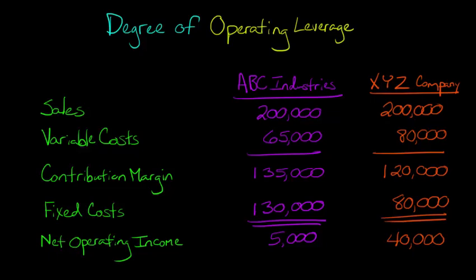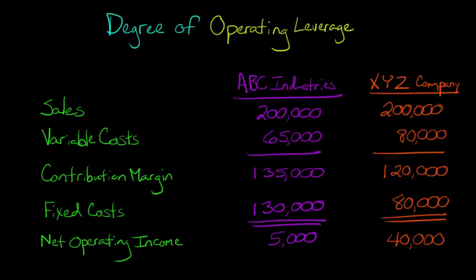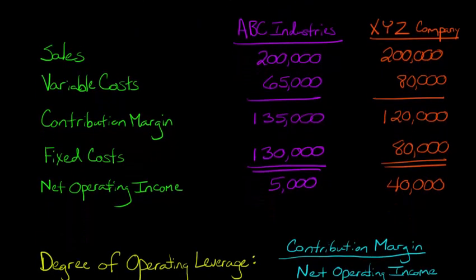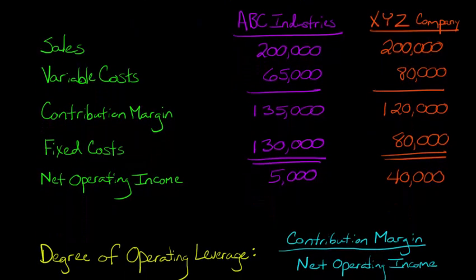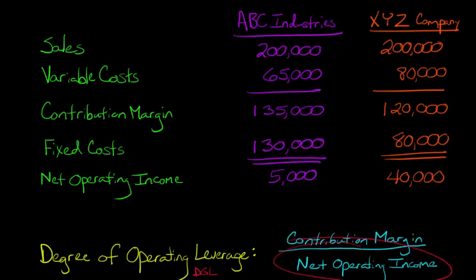As it turns out, the answer is yes. It's something called Degree of Operating Leverage — a multiplier that we can calculate to do just that. Degree of Operating Leverage, which we can abbreviate as DOL, is computed by taking the contribution margin — that's just our sales minus our variable costs — and dividing it by the bottom line, by net operating income. That gives us a number which is basically a multiplier.